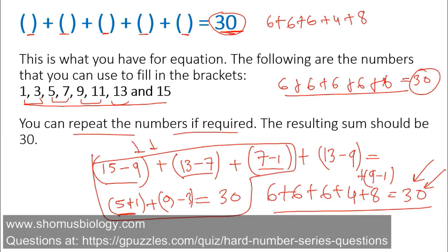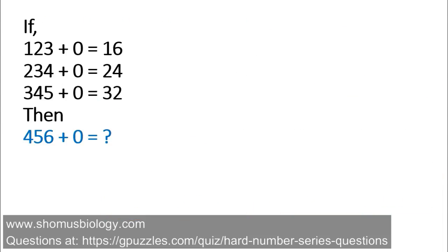Now let's move to the third problem. If 1+2+3+0 = 16, 2+3+4+0 = 24, 3+4+5+0 = 32, then what will 4+5+6+0 equal? The '+0' part stands for nothing since it's constant across all cases, so simplify to: 1,2,3 = 16; 2,3,4 = 24; 3,4,5 = 32. You need to find the relationship between the three input numbers and the output, which could involve addition, subtraction, or multiplication.